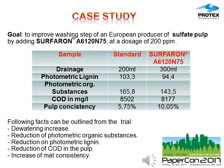In this last slide, we present the figures we obtained with a customer in Europe producing sulfate pulp. You can see easily that by adding our product, all the parameters improved: drainage increased, the content of lignin and organic substances decreased, COD decreased, and pulp consistency increased. That proves the efficiency of our product.